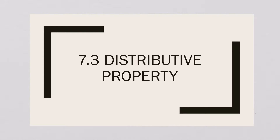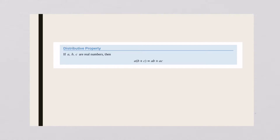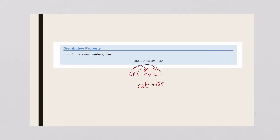Alright, so the distributive property — this is one of my favorite properties. This says that whenever you have a number that is multiplying a process inside the parentheses, you are allowed to multiply that number times each term inside the parentheses. So you've got AB plus AC.